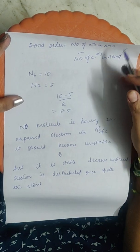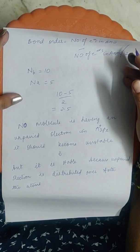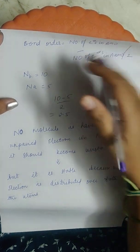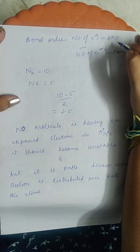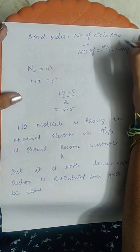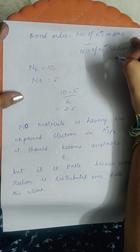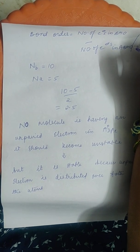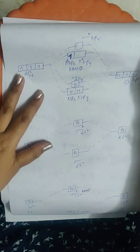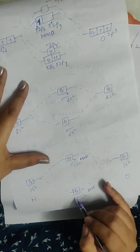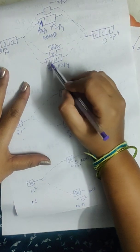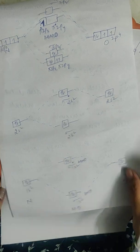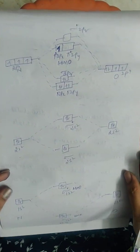Now let us calculate the bond order of nitric oxide in order to know its stability and magnetic nature. Bond order equals the number of electrons in bonding molecular orbitals minus the number of electrons in antibonding molecular orbitals, divided by 2. Counting the bonding molecular orbital electrons: sigma 1s2, sigma 2s2, pi 2px2, pi 2py2, sigma 2pz2 — that gives 10 electrons in bonding molecular orbitals.